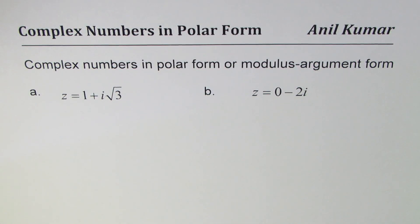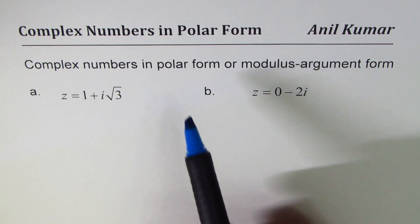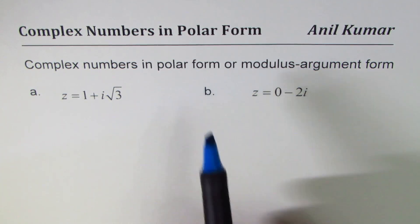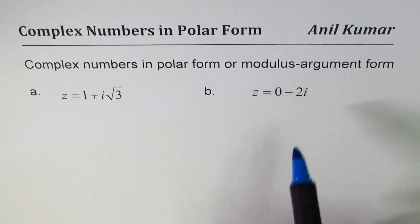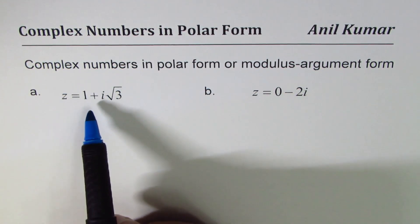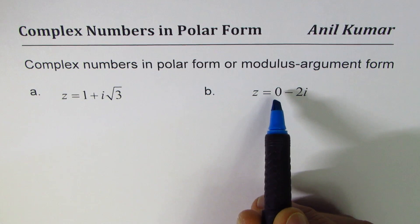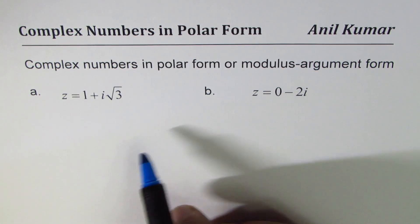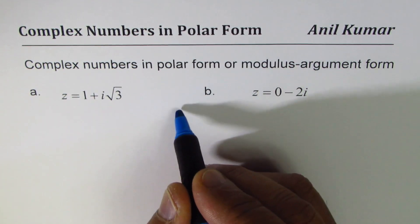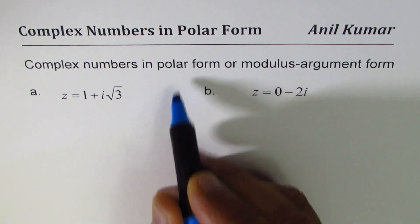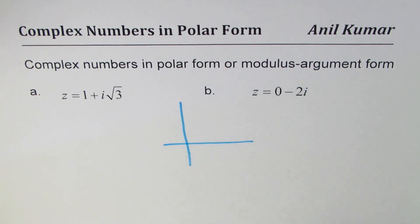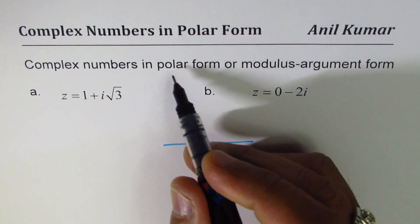I am Anil Kumar and in this video I'll explain how a complex number can be written in polar form. This polar form is also known as modulus-argument form. The two examples here are z equals 1 plus √3·i, and z equals 0 minus 2i. We'll do them one by one. Let me first explain what we mean by polar form, using this coordinate system which we call the modulus-argument or polar form.